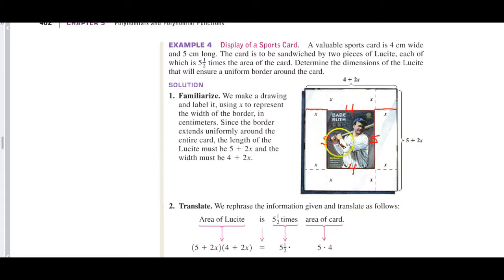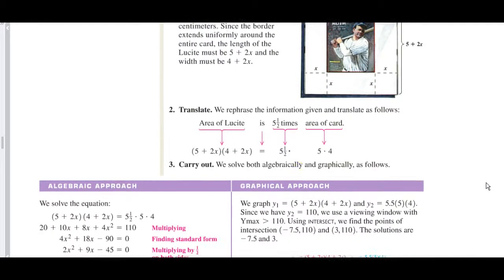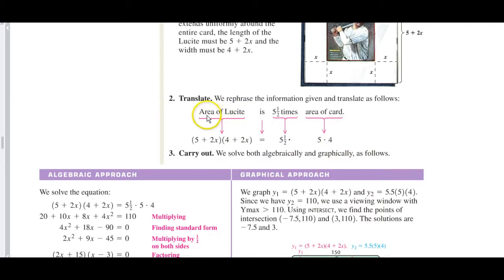So what will be the dimension then of the lucite? Well, this lucite here is going to be, for this width, it's going to be 4 right there, plus an X on this side and an X on this side to give you 4 + 2X. And then the length will be the 5 plus the X up there and the X down there, which is a 2X. Now, the area of the card is 4 × 5 = 20.